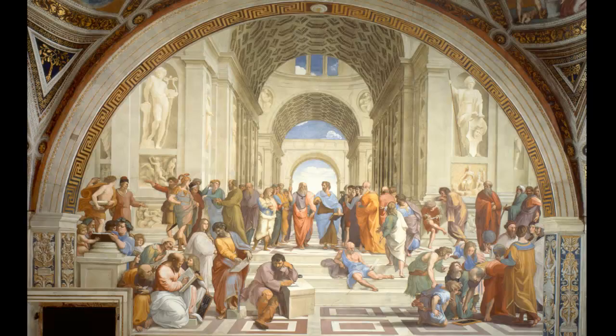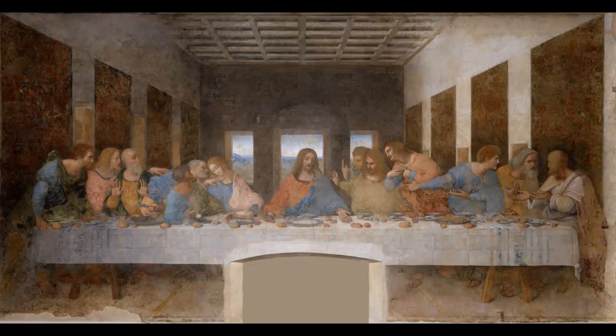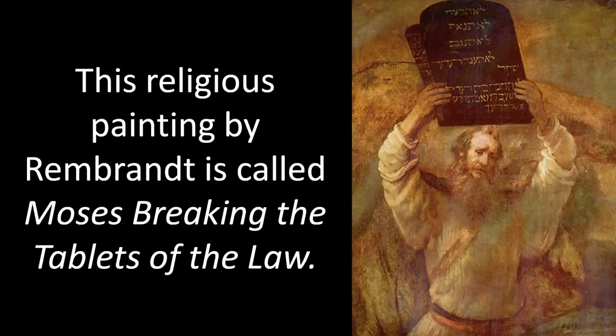Raphael's School of Athens is another history painting — there is Plato and Aristotle in the middle there. A religious painting is a painting of something that happened in a religious book, especially the Bible. It is a kind of history painting. Da Vinci's The Last Supper is a famous religious painting.